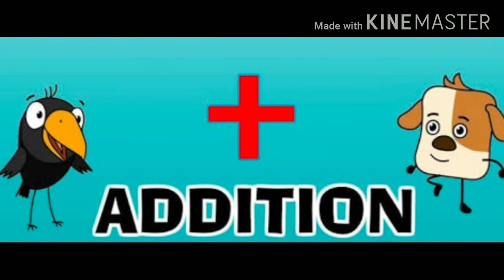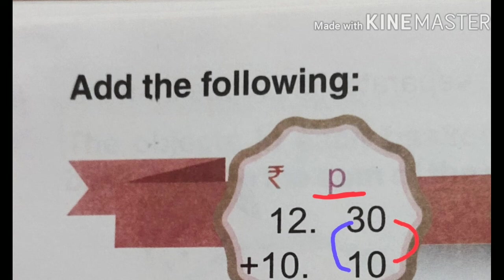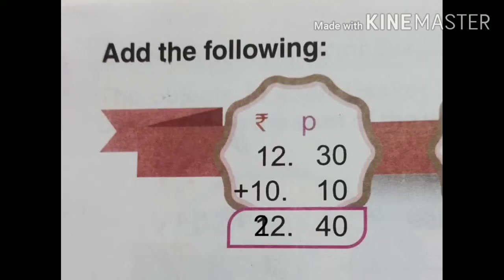Children, how do we do addition in rupees and paisa? Suppose I have to add 12 rupees 30 paisa and 10 rupees 10 paisa together. First, we add the paisa side: 0 plus 0 equals 0, and 3 plus 1 equals 4. Then the rupees side: 2 plus 0 equals 2, and 1 plus 1 equals 2. So our answer is 22 rupees 40 paisa.